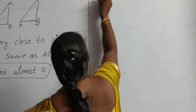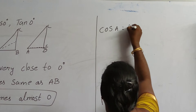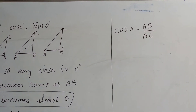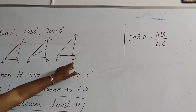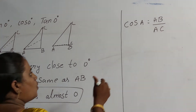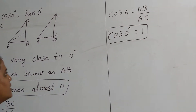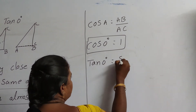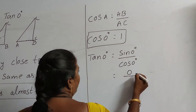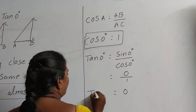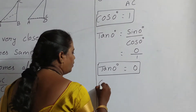Using sin and cos, we find tan 0 degrees equals sin 0 degree by cos 0 degree, which is 0 by 1, so tan 0 degrees equals 0. Then cosecant 0 degrees equals 1 by sin 0 degree, which is 1 by 0. Division by 0 is not defined, so its value is infinity.